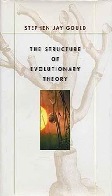In the arena of agency, Gould explores the concept of hierarchy in the action of evolution — the idea that evolution may act on more than one unit simultaneously, as opposed to only acting upon individual organisms. In the arena of efficacy, he explores the forces beside natural selection that have been considered in evolutionary theory. In the arena of scope, he considers the relevance of natural selection to the larger-scale patterns of life.